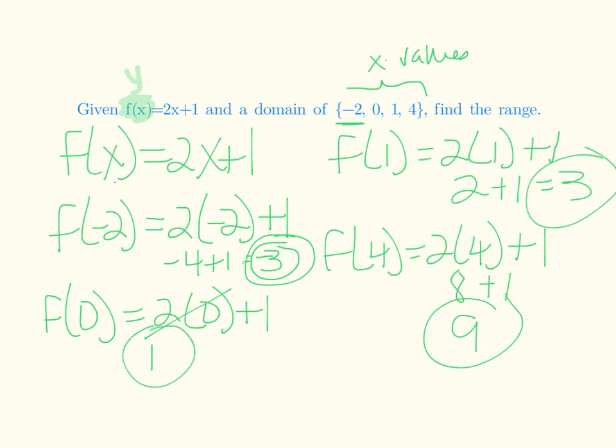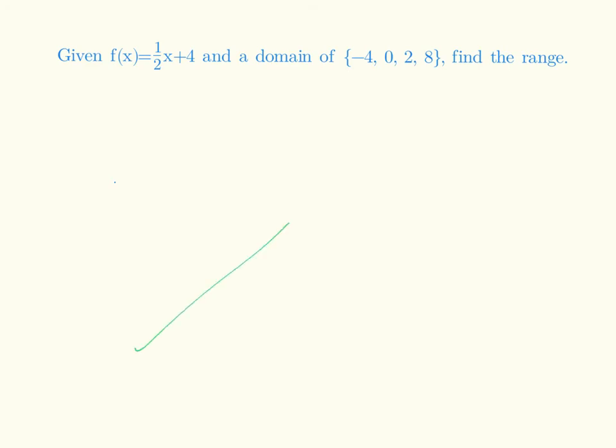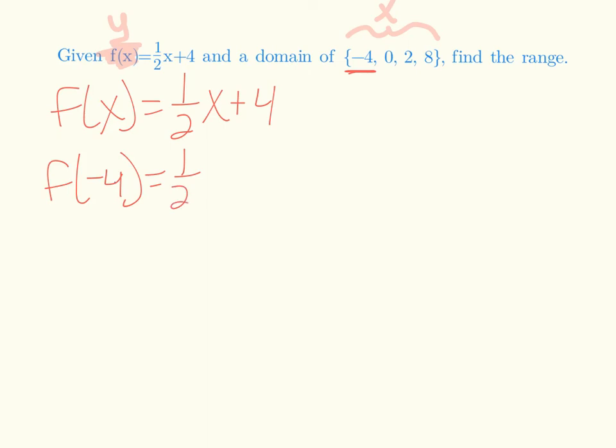Let's do another one like that. So we have F of X. So remember, that is just the Y. And my domain is my X. So I have F of X equals 1 half of X plus 4. So I'm going to substitute those in one at a time. So F of negative 4 equals 1 half times negative 4 plus 4. So half of negative 4 is negative 2 plus 4, and that gives me a 2. There's one answer.